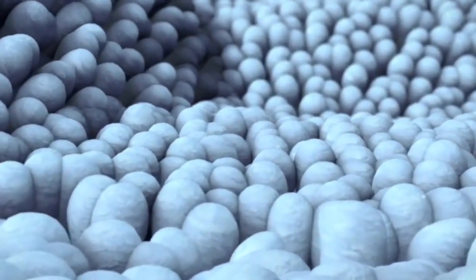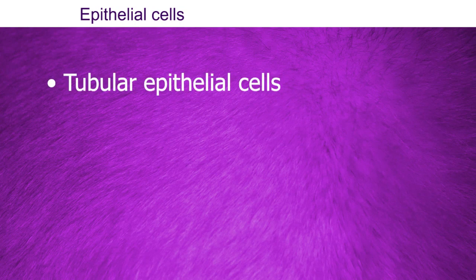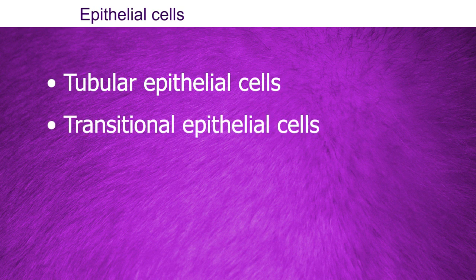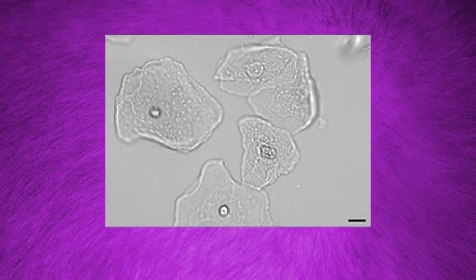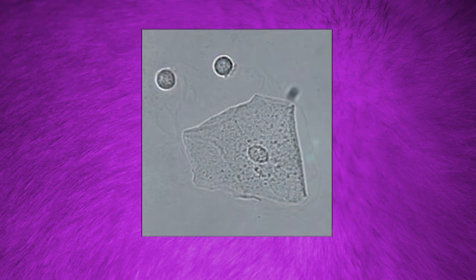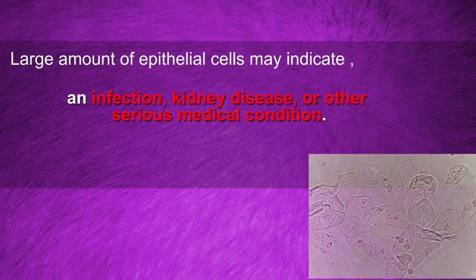Mainly there are seven types of cells in urine sediment. Epithelial cells are important to line the surface of your body. They can be categorized into tubular epithelial cells, transitional epithelial cells, and squamous epithelial cells. Usually a few epithelial cells can be seen in normal voided urine; however, a large amount may indicate an infection, kidney disease, or other serious medical condition.